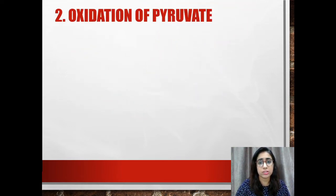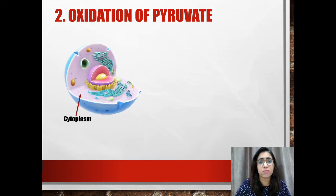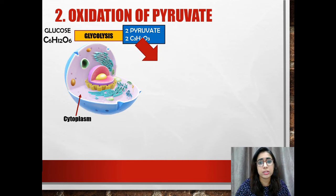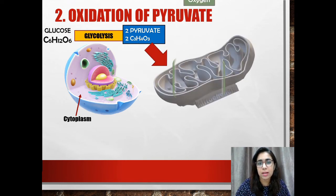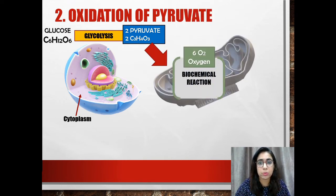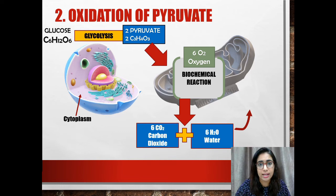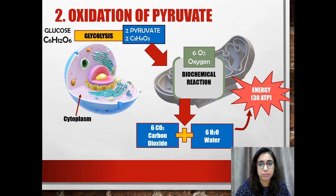Next, we will look at the oxidation of pyruvate. In the presence of oxygen, pyruvate formed in the cytoplasm will go into the mitochondria. In the mitochondria, pyruvate is broken down in a series of biochemical reactions with oxygen into inorganic molecules — carbon dioxide, water, and lots of energy. The oxidation of two pyruvate molecules can produce up to 38 molecules of ATP. That's a lot!